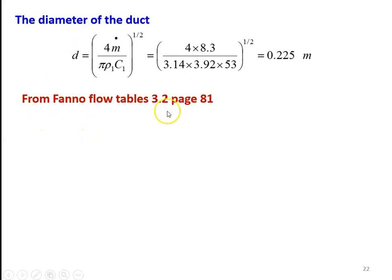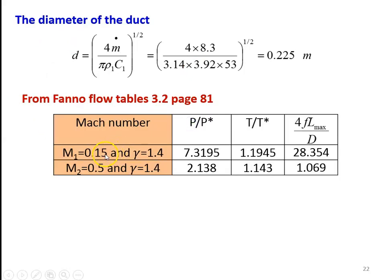From the fanno flow table, table number 3.2, page number 81, we take M1 equal to 0.15 and gamma equal to 1.4. We take the properties P by P star, T by T star, and 4FL max by D. For M1 equal to 0.15, the values are: P1 by P star equal to 7.3195, T1 by T star equal to 1.1945, 4FL max by D equal to 28.354.